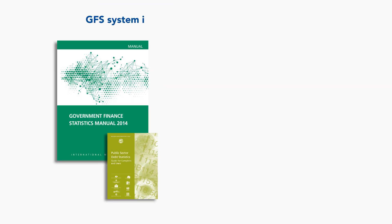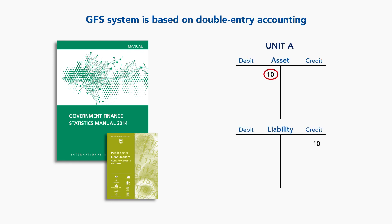The GFS system is based on double-entry accounting. This means that every debit entry has an equal credit entry. In this sense, we can also say that economic flows — that is, transactions, re-evaluations, and other volume changes — in the GFS framework are vertically integrated.